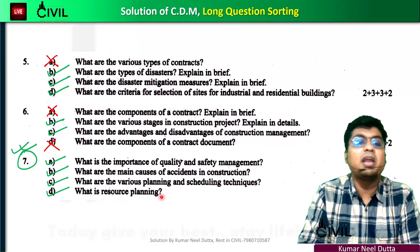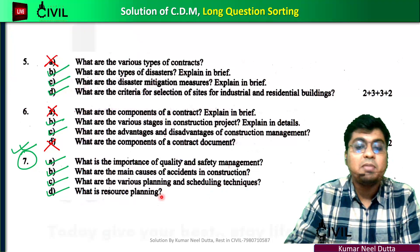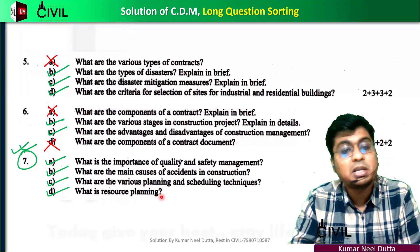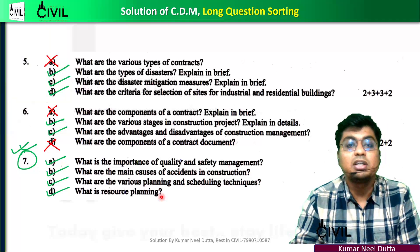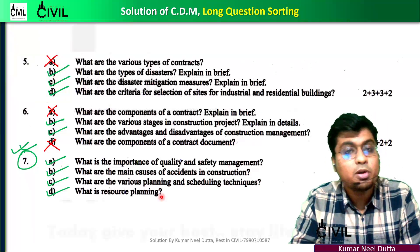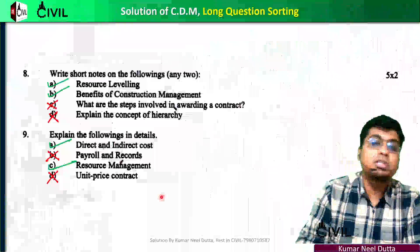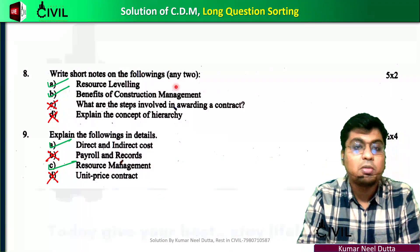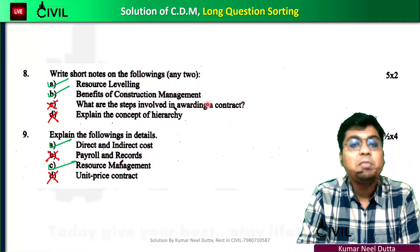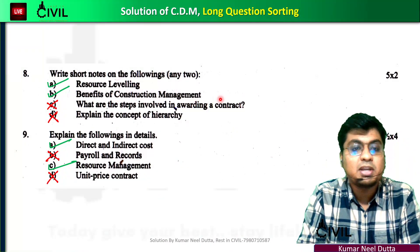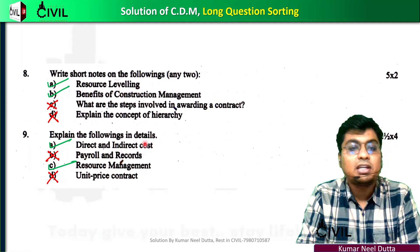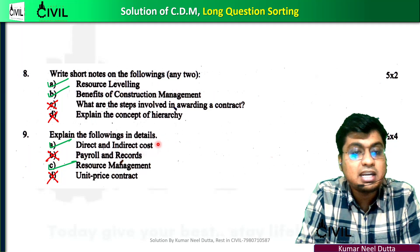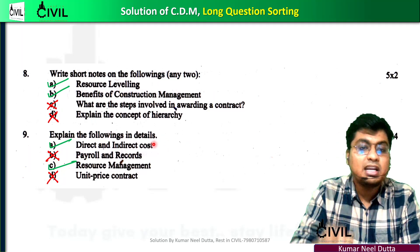Resource planning, resource leveling, resource allocation, etc. The question is about resource leveling. The benefit of construction management — the question is about cost management: direct cost, indirect cost.